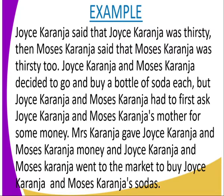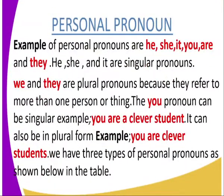Joyce Karanja said that Joyce Karanja was thirsty. Then Moses Karanja said that Moses Karanja was thirsty too. Joyce Karanja and Moses Karanja decided to go and buy a bottle of soda each, but they had to first ask Joyce Karanja and Moses Karanja's mother for some money. From this example, you can see there is a repetition of their names.